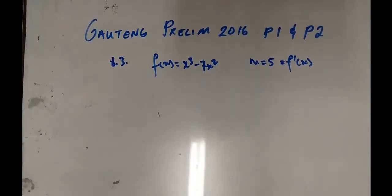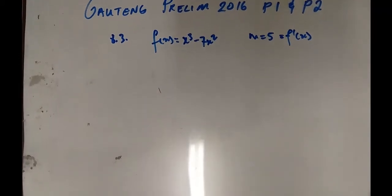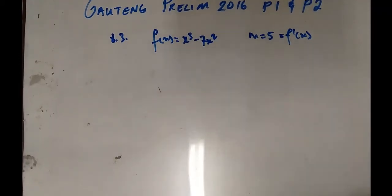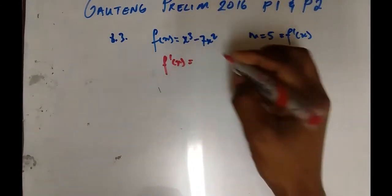What's going to happen now is we're going to find the first derivative. The first derivative is given by f'(x) = 3x² - 14x.